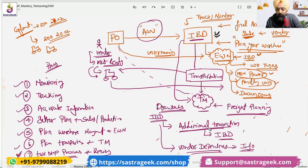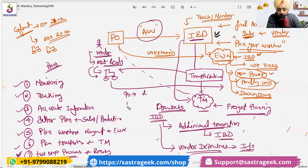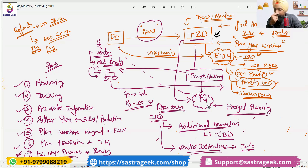These are the drawbacks: additional transactions will come, and vendor dependency will come. So when consulting your client, you need to advise whether to go for PO-GR or for PO-IBD-GR. Now you understand the pros and cons. If you have TM or EWM systems, then you will have to go with IBD — IBDs need to be created.